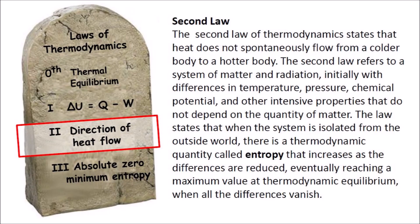The second law of thermodynamics states that heat does not spontaneously flow from a colder body to a hotter body. The second law refers to a system of matter and radiation, initially with differences in temperature, pressure, chemical potential, and other intensive properties that do not depend on the quantity of matter. The law states that when the system is isolated from the outside world, there is a thermodynamic quantity called entropy that increases as the differences are reduced, eventually reaching a maximum value at thermodynamic equilibrium when all the differences vanish.